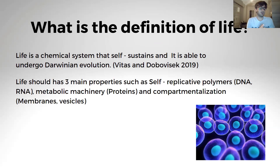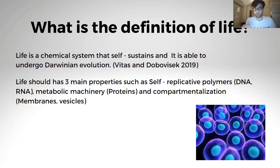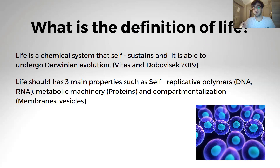What about Darwinian evolution? It means a selection process. Our genetic materials should be transferred to our daughter cells, and in this way life can be sustainable — without sustainability, life cannot occur. Moving from this definition, we can say life has three main properties.